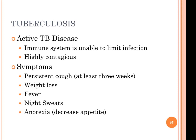Active TB occurs when the immune system is unable to limit the infection, and it is highly contagious. Active TB will be seen in adults, not typically in children. Symptoms include a persisting cough lasting at least three weeks, weight loss, fever, night sweats, and decreased appetite.